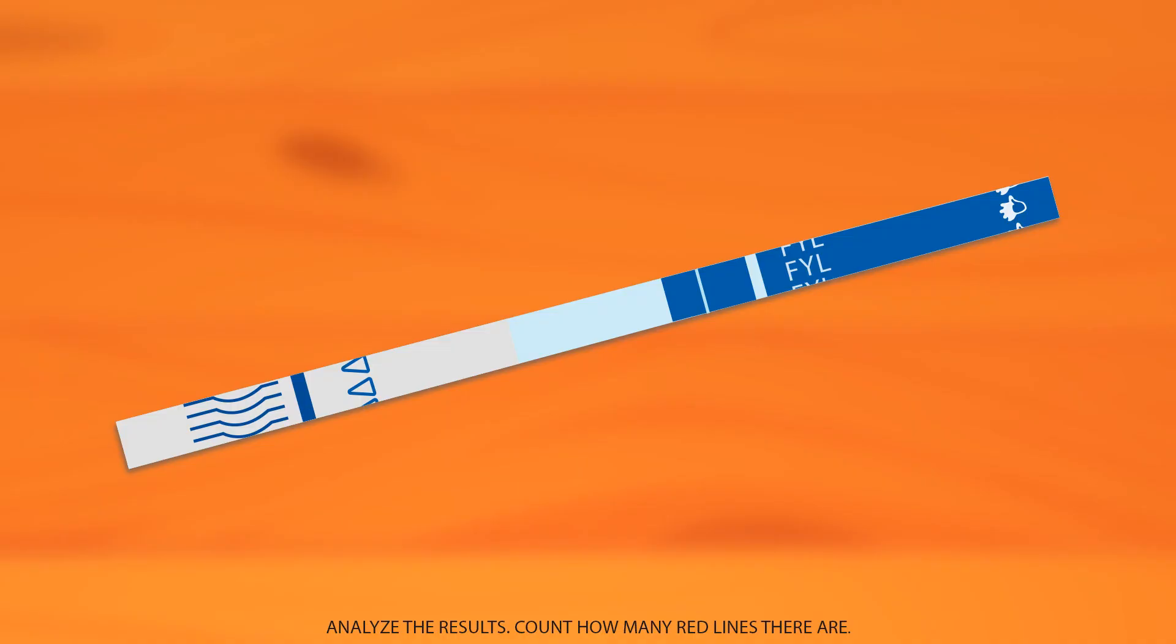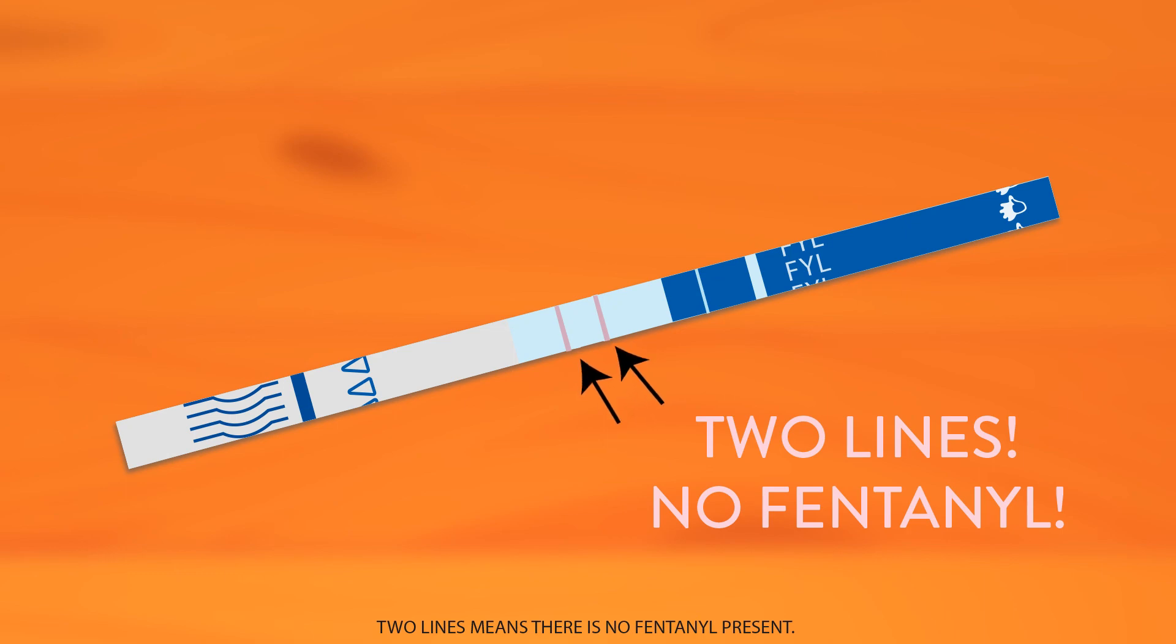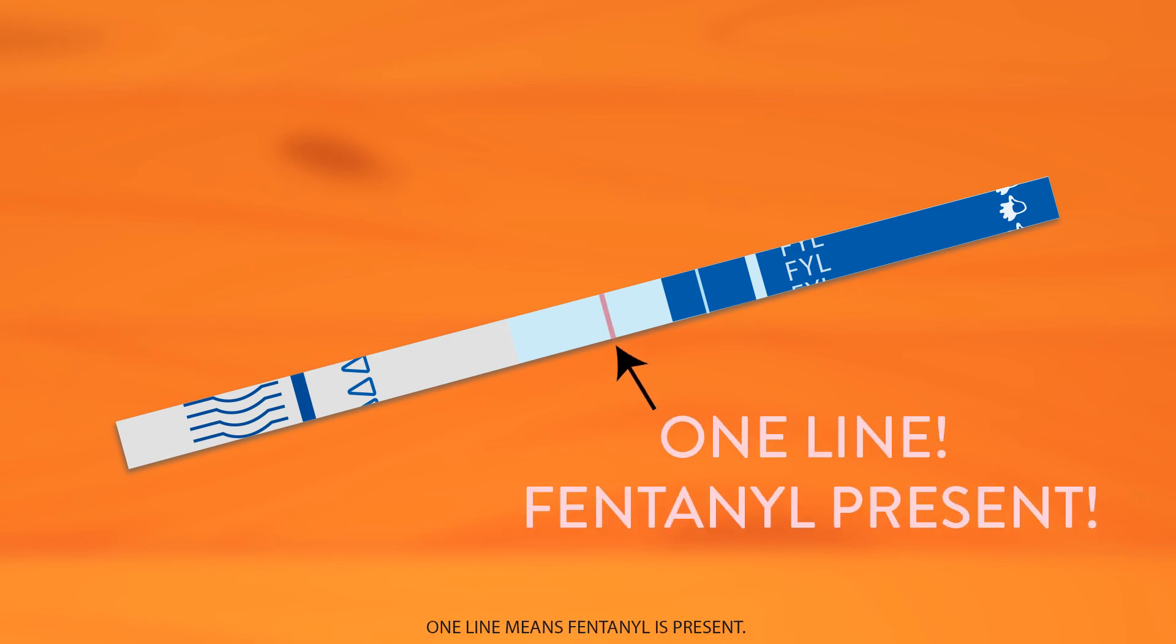Step 6. Analyze the results. Count how many red lines there are. Two lines means there is no fentanyl present. One line means fentanyl is present.